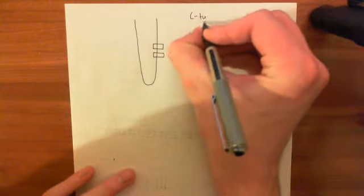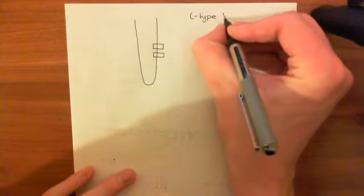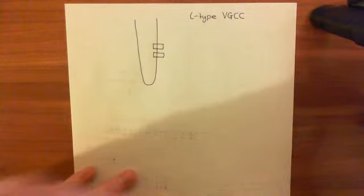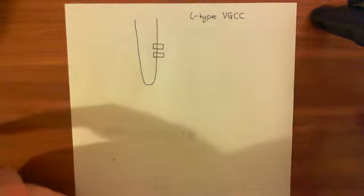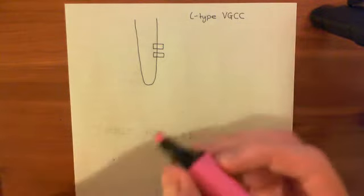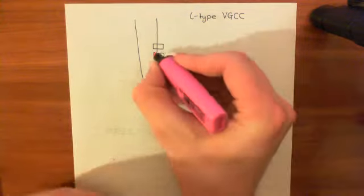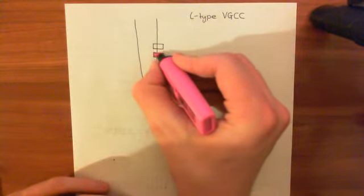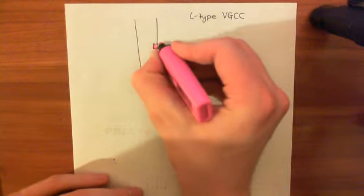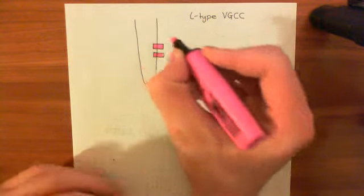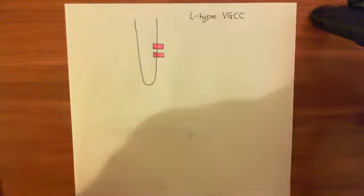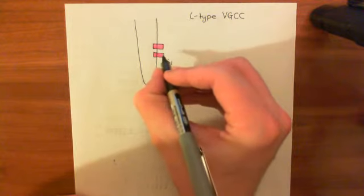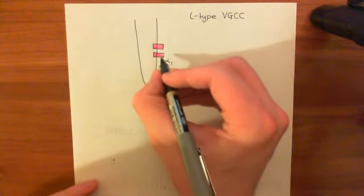The shorthand for voltage-gated calcium channel is VGCC. Voltage-gated calcium channels are not just one protein — they're a huge collection of proteins all stuck together. The most important subunit of this mass of proteins is the alpha-1 subunit, which is the subunit that actually makes the pore of the channel.